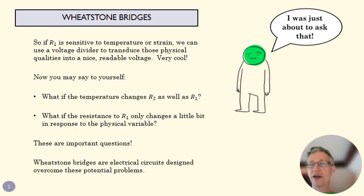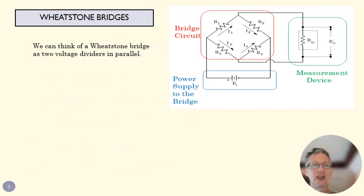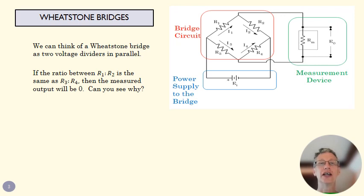A Wheatstone bridge is a kind of voltage divider circuit that tries to get around these problems. If we look at this up here in red, this is our Wheatstone bridge. If you look at it, you can see that it's two voltage dividers in parallel.